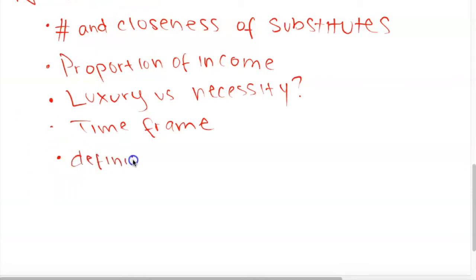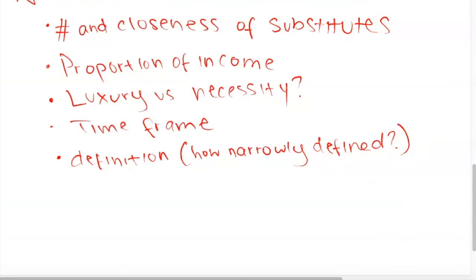The next determinant is the definition — how narrowly a good is defined. If we say 'the price elasticity of food,' food is an extremely general definition with no close substitutes, so it would be greatly inelastic. Similarly, cars in general would be relatively inelastic. But if we narrow it to just Nissan cars, that would be relatively more elastic.